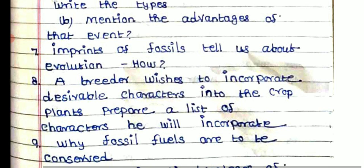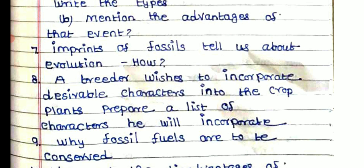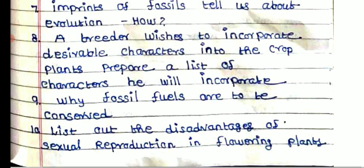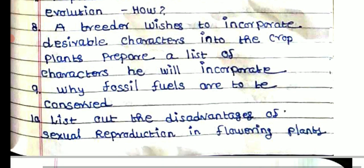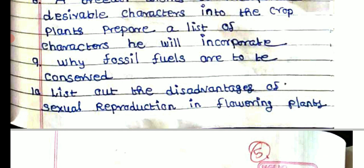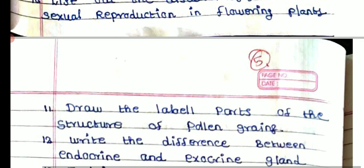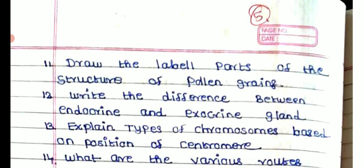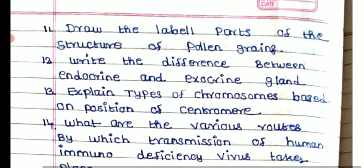Discuss the first events; write the types and mention the advantages. What do the imprints of fossils tell us about evolution? A new breed of wishes to incorporate desirable characters in crop plants — prepare a list of the characters to incorporate. How should fossils be conserved? List out the disadvantages of sexual reproduction in flowering plants.